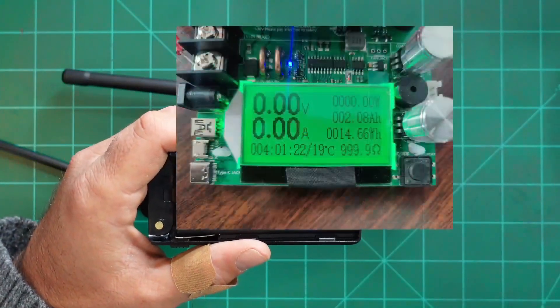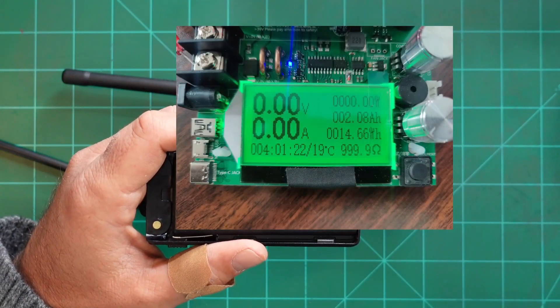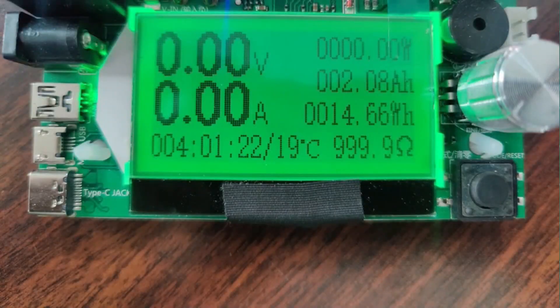So I ran a continual load tester on here. On the continual load tester, I drained this battery at a half of an amp and I drained it for a total of four hours and it came out to 2.08 amp hours, which is roughly 2000 milliamp hours. So that's pretty impressive.